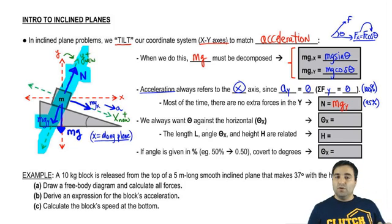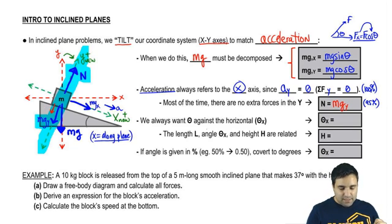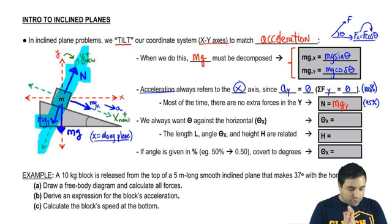Now if you had other forces, then that wouldn't be the case. For example, if I push here with the force of f, now I would say that normal equals f plus mgy. That's not going to happen very often.